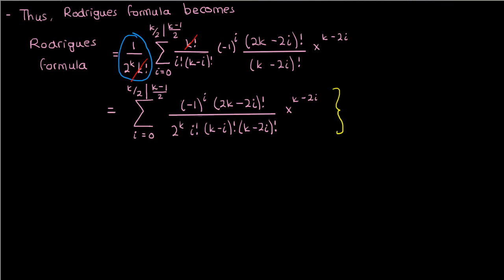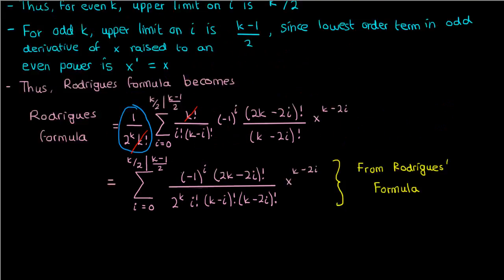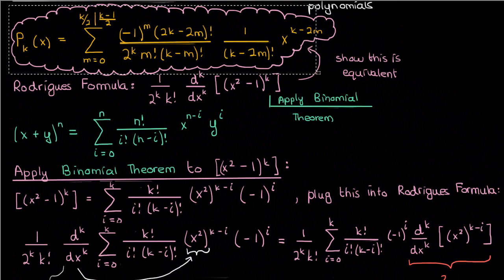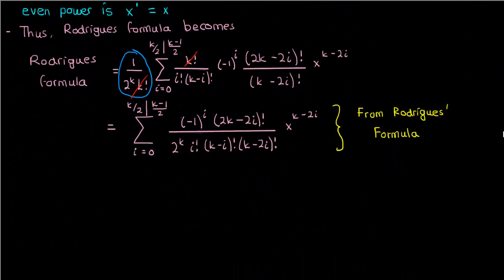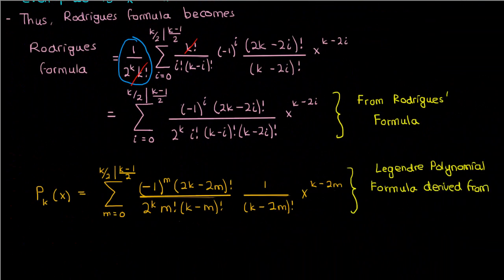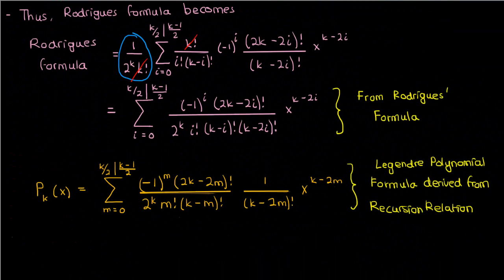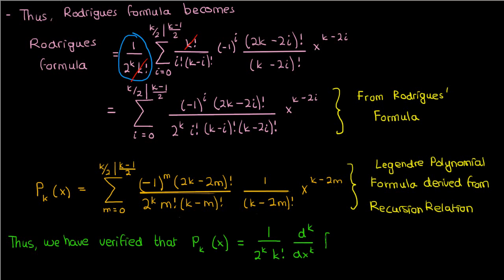Now look at this expression which we got from manipulating the Rodriguez formula and compare it to the Legendre polynomial formula we found in the previous video. You'll see that the formulae are the exact same, with the only difference being the index i changed to an index m. Thus we've shown that the Rodriguez formula gives you Legendre polynomials and so we verified that the kth order Legendre polynomial equals 1 over 2 to the power k k factorial times the kth derivative of x squared minus 1 to the power k.